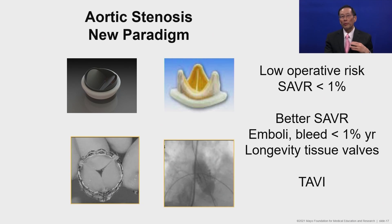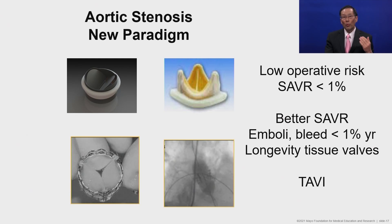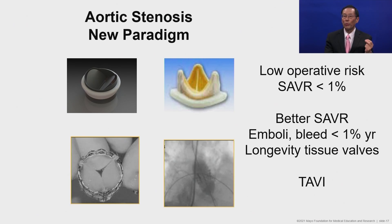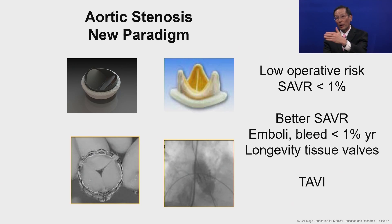There is now a change in the risk of the operation. At a very good surgical center, the operative risk of an isolated surgical aortic valve replacement is less than 1%. Newer-generation mechanical and tissue prostheses have much lower complication rates — embolic events and bleeding are less than 1% per year — and tissue valves have much greater longevity. Additionally, TAVI further decreases the operative risk for patients with isolated aortic stenosis.